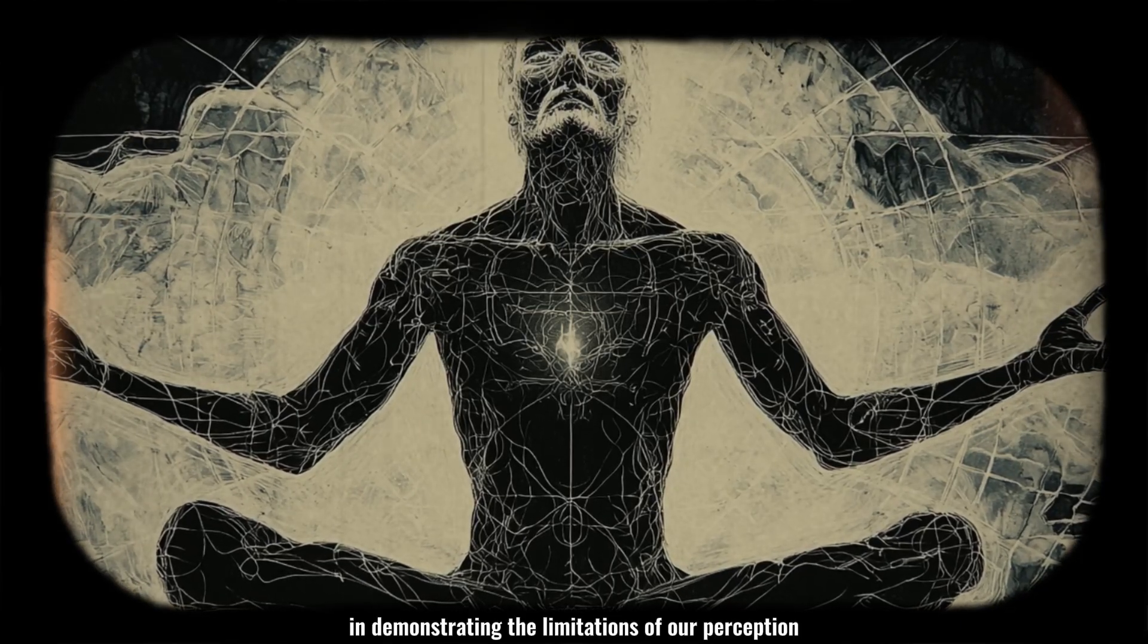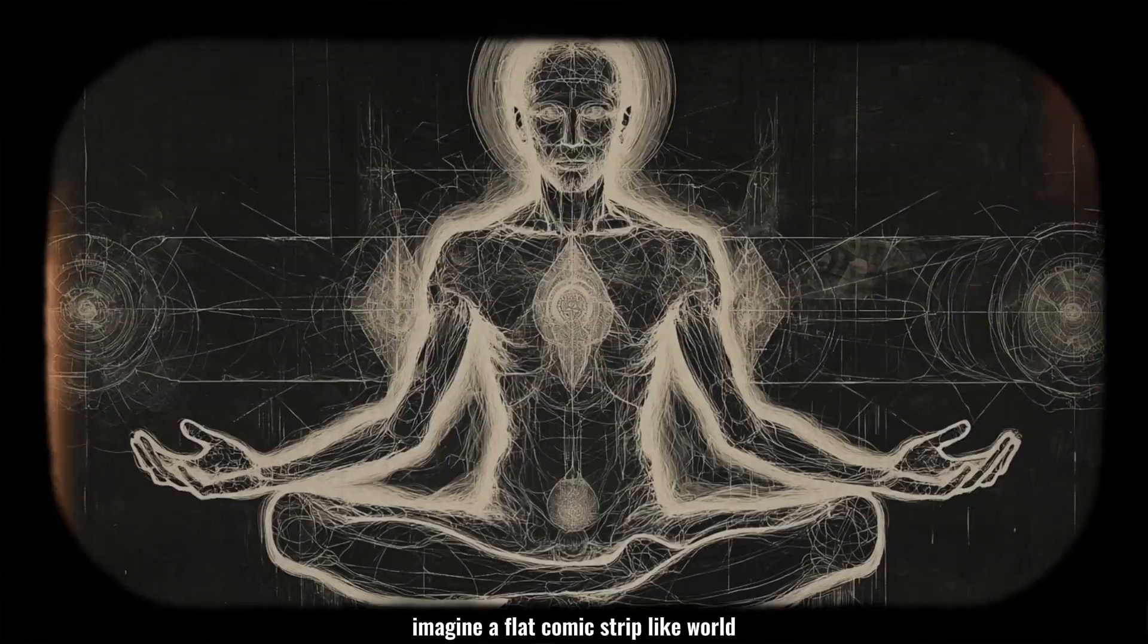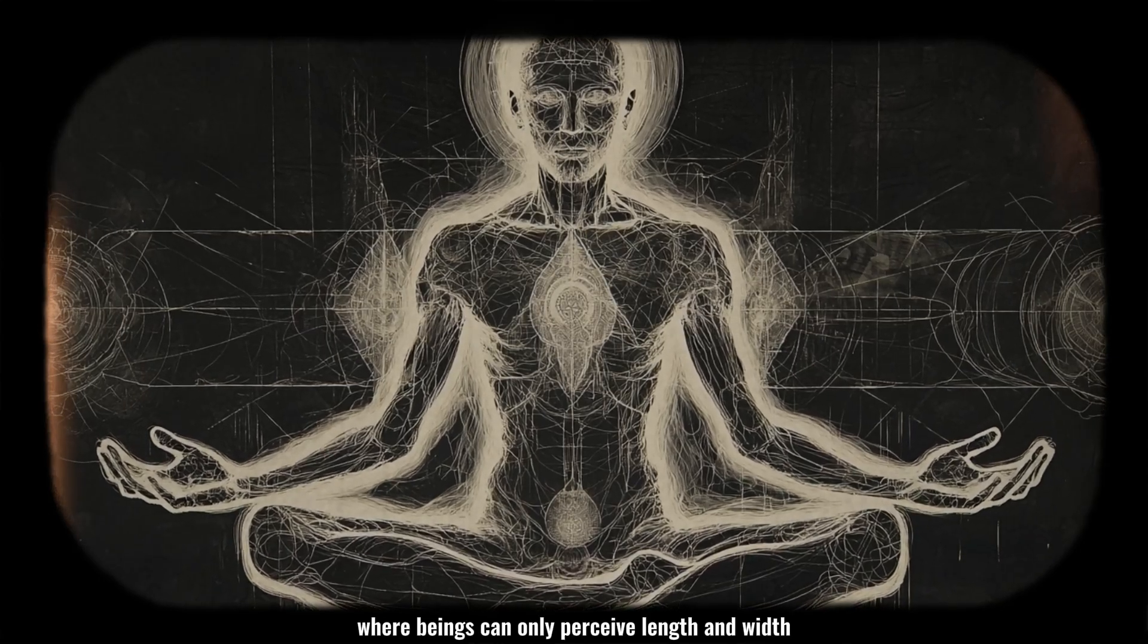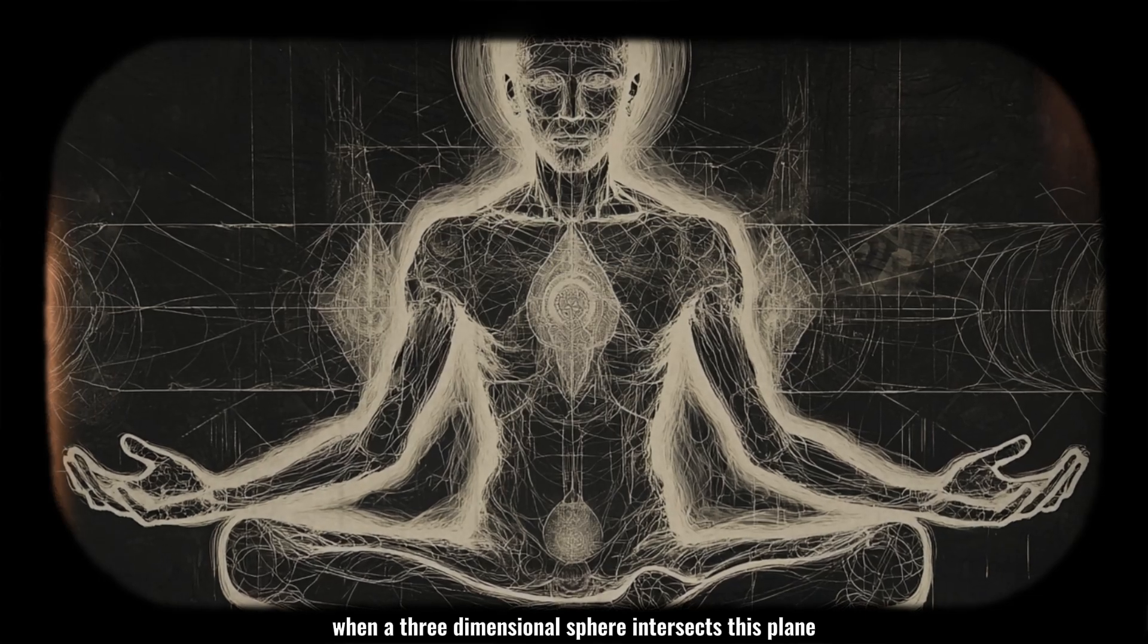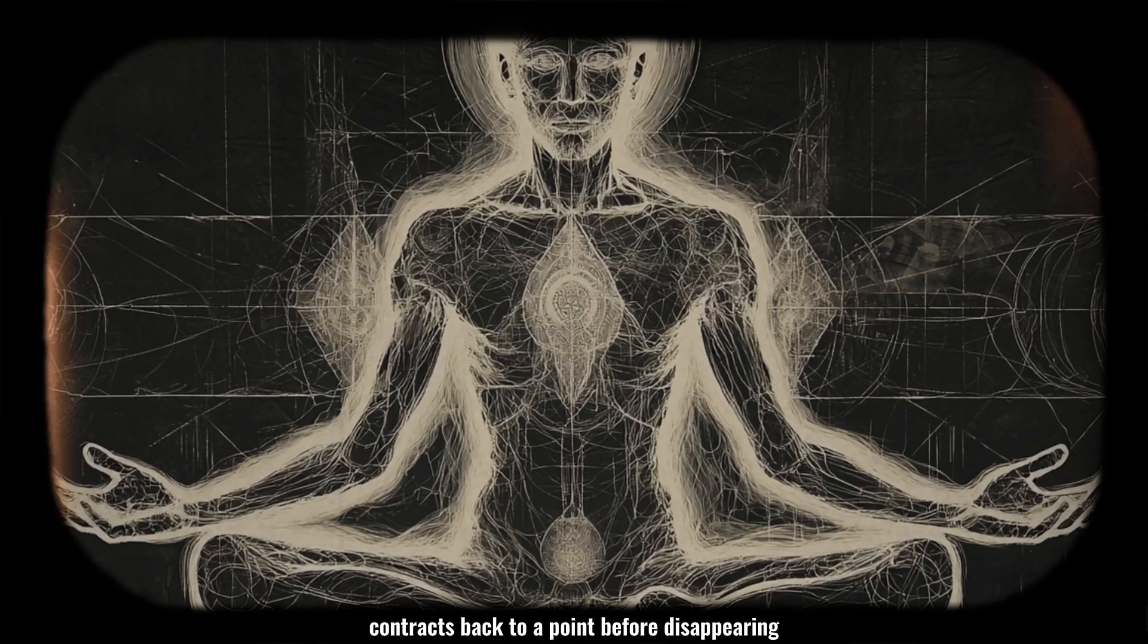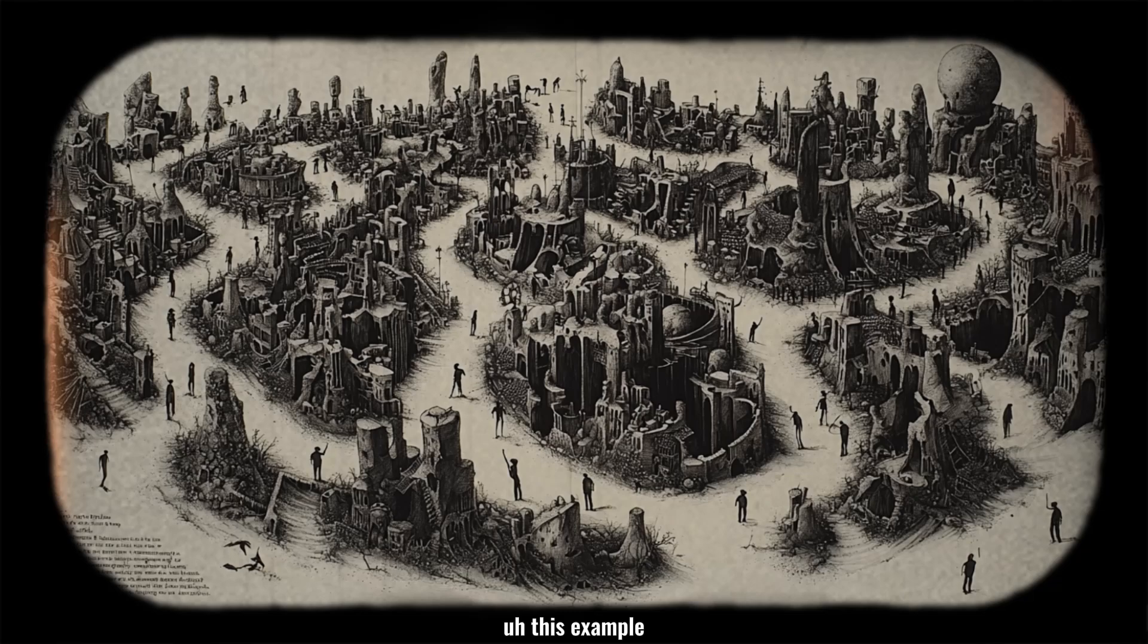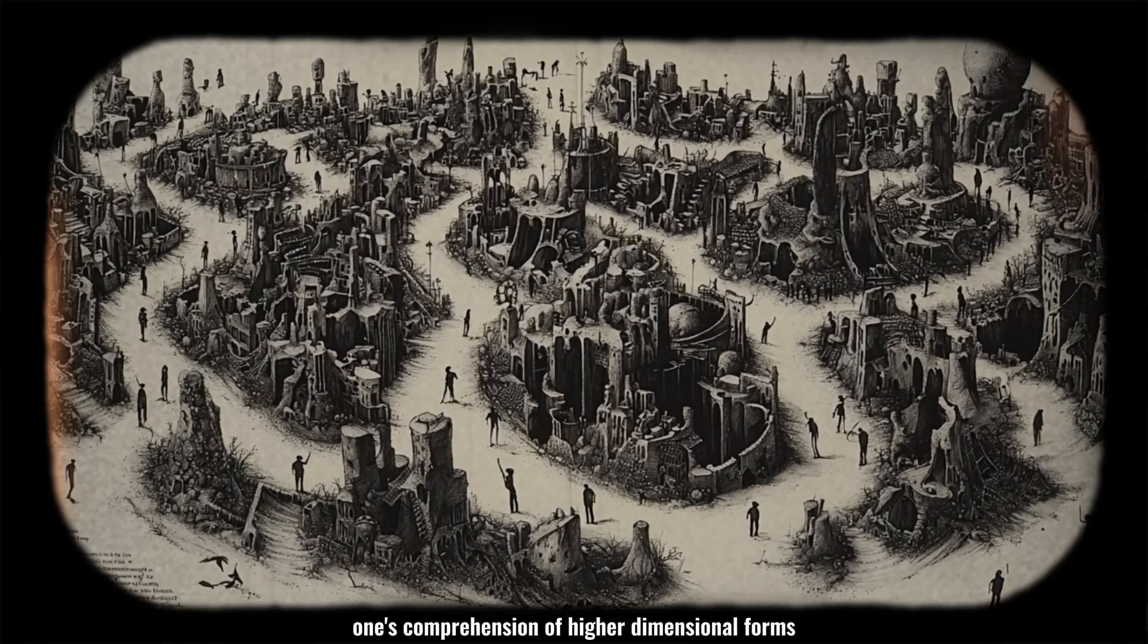In demonstrating the limitations of our perception, Pryker uses an analogy involving two-dimensional entities. Imagine a flat, comic strip-like world where beings can only perceive length and width. When a three-dimensional sphere intersects this plane, it first appears as a dot, then expands into a circle, and finally contracts back to a point before disappearing. This example illustrates how limited dimensions can restrict one's comprehension of higher dimensional forms.